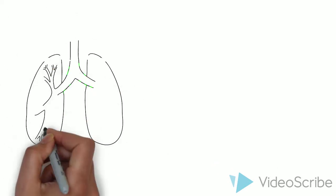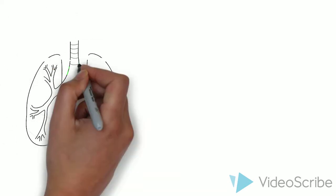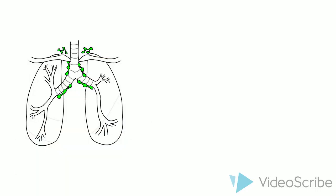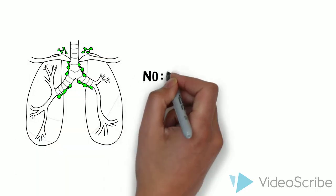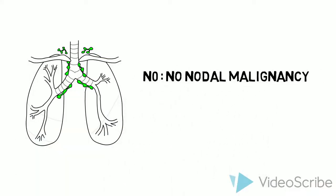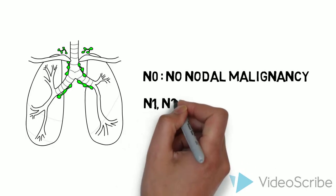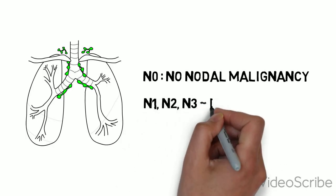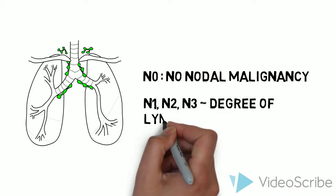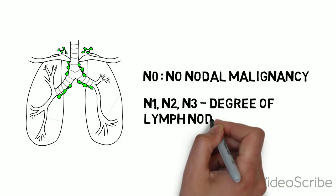N refers to the presence or absence of malignancy in the regional lymph nodes. N0 means there is no nodal malignancy. With increasing N number, this represents an increasing number of lymph nodes involved.